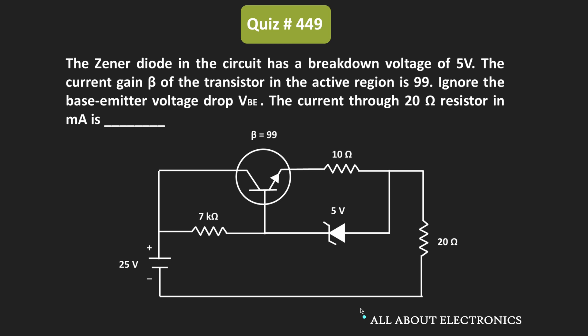In this question, we have been given a transistor base circuit where the breakdown voltage of the Zener diode is equal to 5V. We have also been given that the current gain beta of the transistor is equal to 99, and the base-emitter voltage drop VBE is negligible. We have been asked to find the current through the 20 ohm resistor.